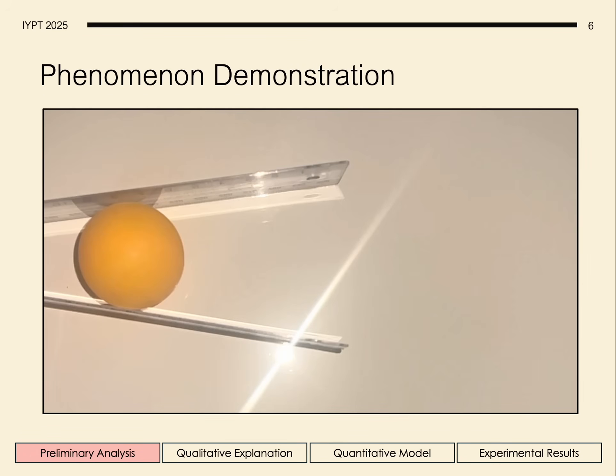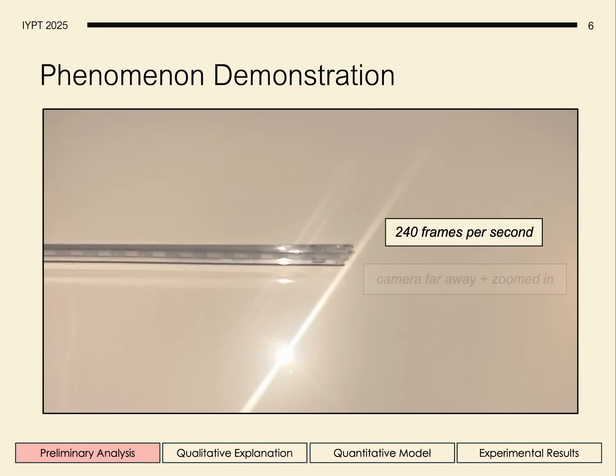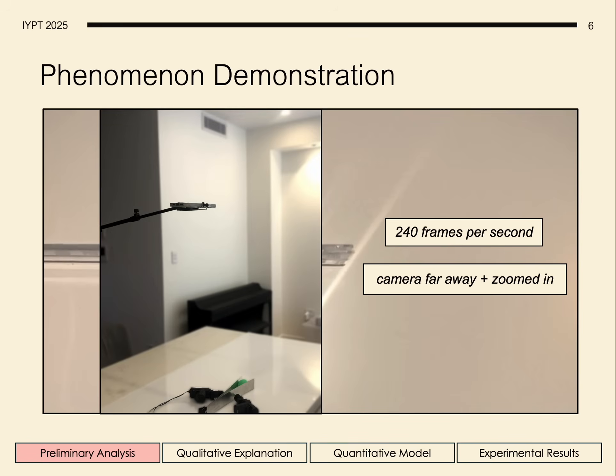So here's a demonstration of the phenomenon in slow motion. To record the videos, we used a 240 hertz high speed camera, placed far away and zoomed in to prevent parallax error, as seen here.